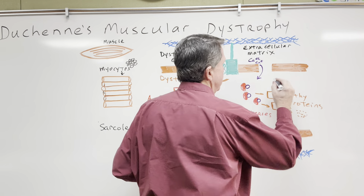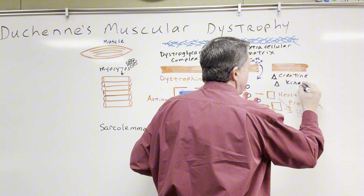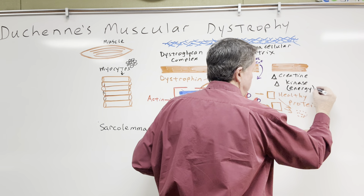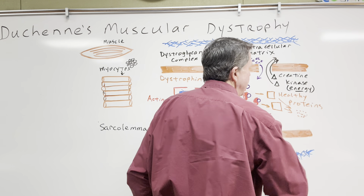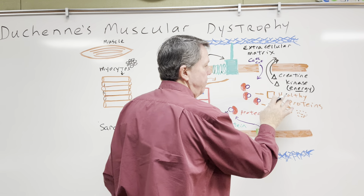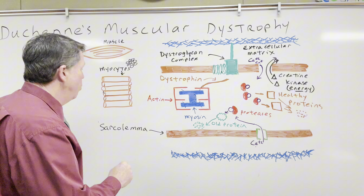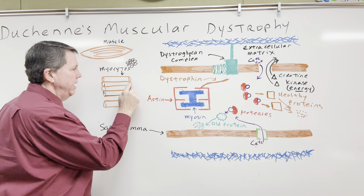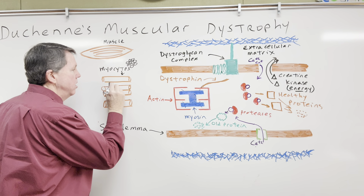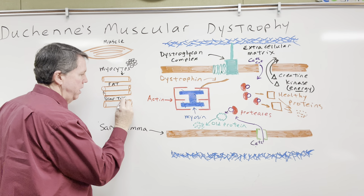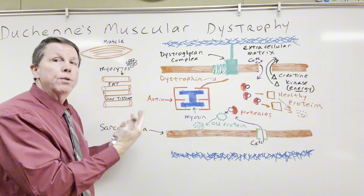Another molecule inside the myocyte is creatine kinase, which provides energy to the cell. Because of the tear, creatine kinase leaks out, and the myocyte loses energy and can't function properly. Combined with the breakdown of healthy proteins, the myocyte eventually dies. When the person is young, dead myocytes can be replaced by new ones. Unfortunately, as a person gets older the body loses that ability, and instead replaces myocytes with fat and scar tissue — which accumulates more and more over time.